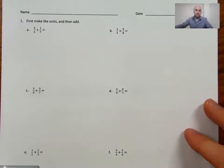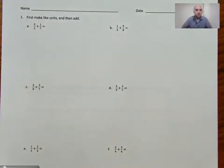So on this problem set here, we're going to first make like units, and then we're going to add. So we're going to be doing exactly what we were doing before with our graphic model here, our visual model. But we're going to start to move, like I said, more toward a standard algorithm where we're going to try to do that numerically.